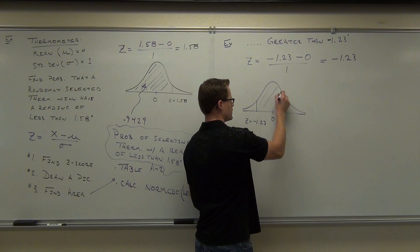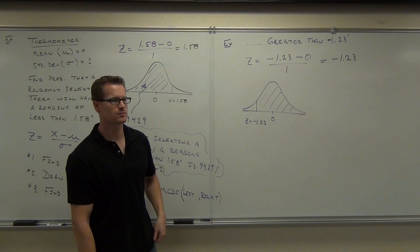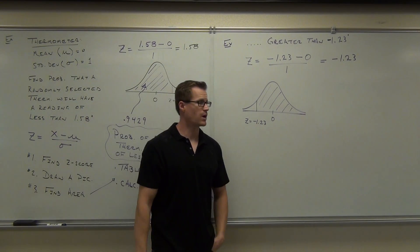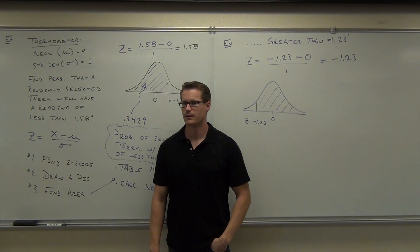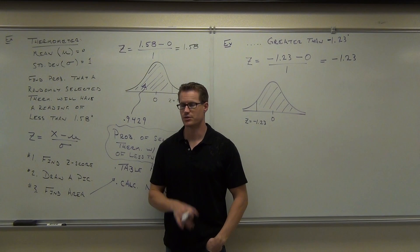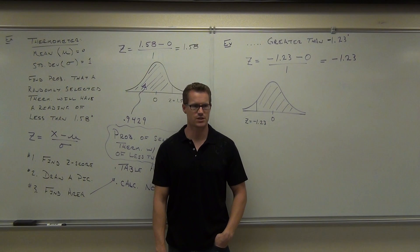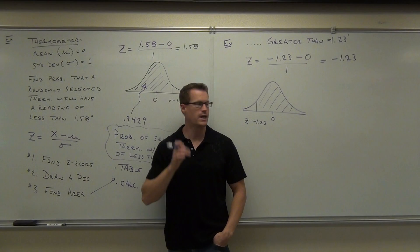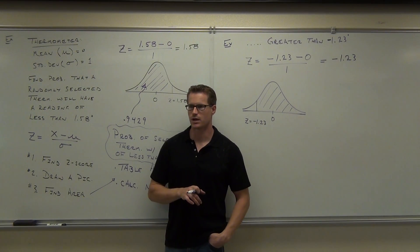So we're shading this side, right there. Find your negative z-score right now on your table or your calculator. I'd like you to use the table first if you can — you all should have a table. Find the z-score negative 1.23. Look up when you found it so I know you're all done. Look up when you found the z-score negative 1.23.